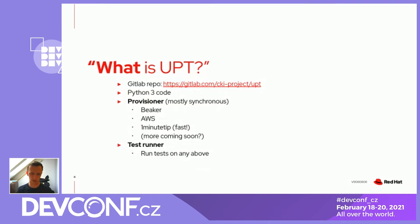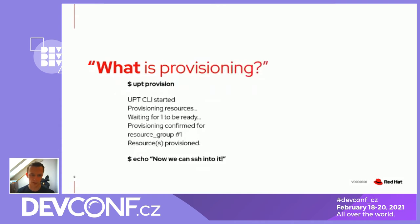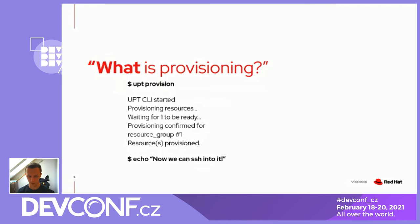The second part of Upt is a test runner for kernel testing that can run tests on any of the above provisioners. What does provisioning look like in Upt? You run a very simple command — the idea was to keep it really simple — and it will print some output showing that it's provisioning resources and will say when provisioning completed successfully. You run the command, wait a bit, get the resource, and now you have a resource you can SSH into.